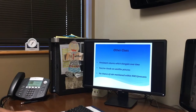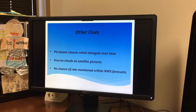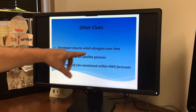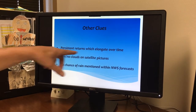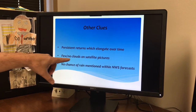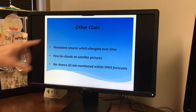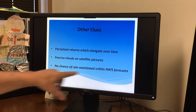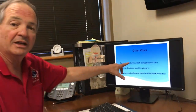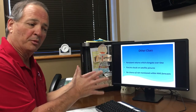So some other clues: when you look at these chaff returns — they'll be very common out over the Atlantic Ocean and adjacent coastal waters along the South Carolina and Georgia coast — you'll see they take on some very odd patterns with elongation over time. They'll occur in environments where there are few or no clouds on the satellite picture, so it doesn't make sense there would be rain. And when you see these types of returns in areas where there's no chance of rain mentioned in the National Weather Service forecast, that's a clue to check the correlation coefficient. Remember: blue is non-precipitation, purple means precipitation.